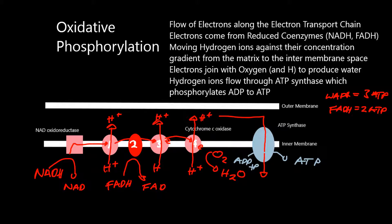The flow of electrons, and the electrons eventually join with oxygen to produce water, moves hydrogen ions against their concentration gradient from the matrix to the intermembrane space, which is the gap between the inner and the outer membranes.